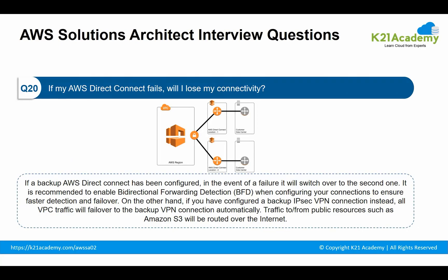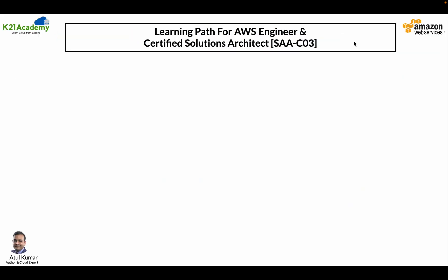The next question: if my AWS Direct Connect fails, will I lose my connectivity? If a backup AWS Direct Connect has been configured, in the event of a failure, it will switch over to the second one. It is recommended to enable Bidirectional Forwarding Detection (BFD) when configuring your connection to ensure faster detection and failover. If you have configured a backup IPsec VPN connection instead, all VPC traffic will failover to the backup VPN connection automatically. Traffic to or from public resources such as Amazon S3 will be routed over the internet. If you do not have a backup AWS Direct Connect or IPsec VPN link, then Amazon VPC traffic will be dropped in the event of a failure.